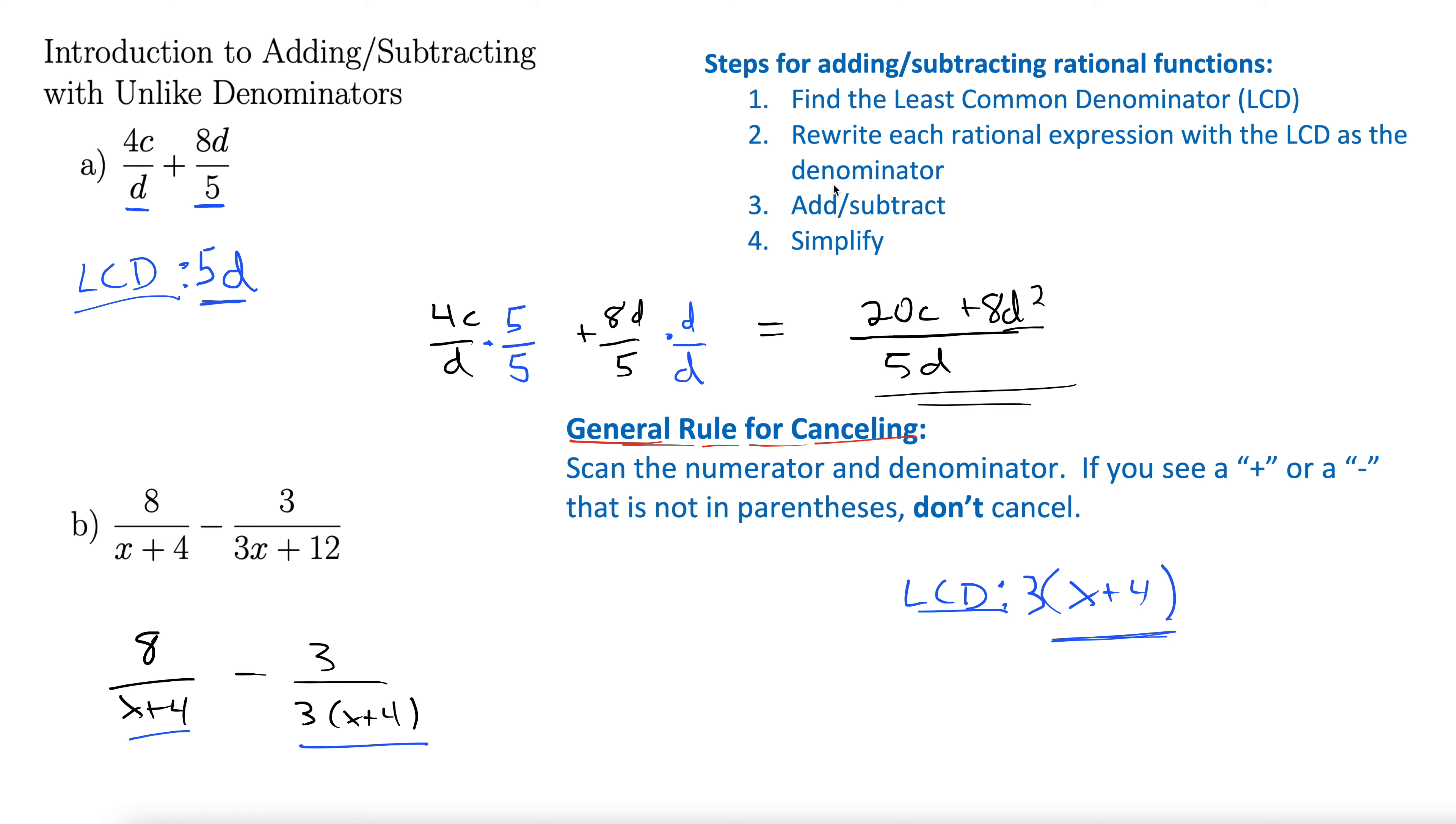So next step, rewrite each rational expression with the LCD as the denominator. We are missing a 3 in the denominator on the first one. We make sure and put it in the numerator as well, so that we're just multiplying by 1. That gives, and note that we're already okay. We're okay down here for the second one. 3x plus 4 is already there. That is our least common denominator, so we're good to go. That gives us, on the bottom here, we have 3 times quantity x plus 4. And up top, we have 3 times 8, which is 24 minus 3.